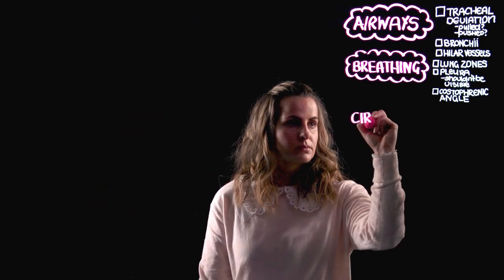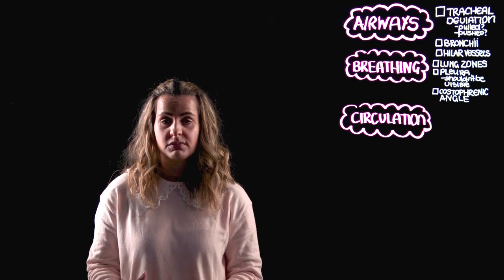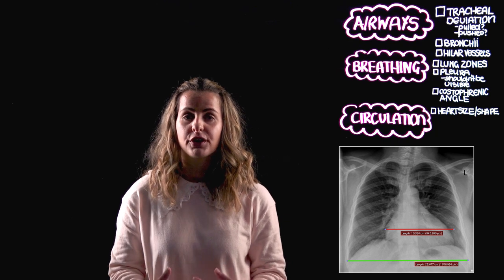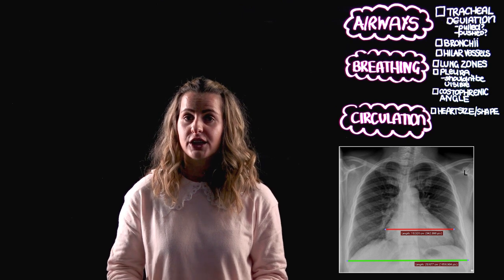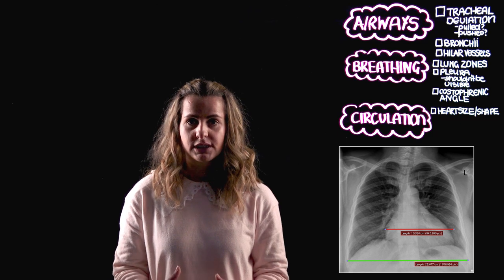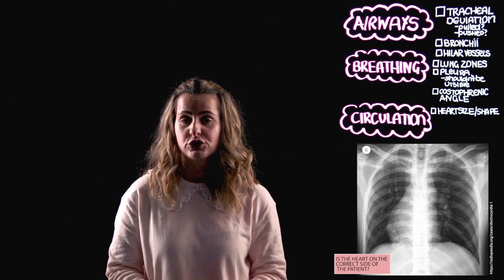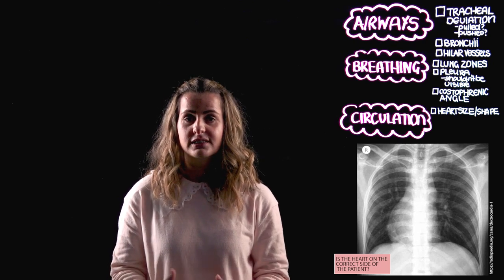C in our mnemonic represents circulation or cardiac structures, including assessment of the heart and the cardiomediastinal contour. Check how clear the cardiac silhouette is, whether the heart is on the correct side, and whether it is enlarged. On a posteroanterior view, the cardiothoracic ratio should be less than 50% of the thoracic window — if greater than 50%, this suggests cardiomegaly. Note that on an AP projection the heart will appear artificially enlarged. Check that the heart is on the left side with the apex pointing left; if inversely positioned, this is referred to as dextrocardia.